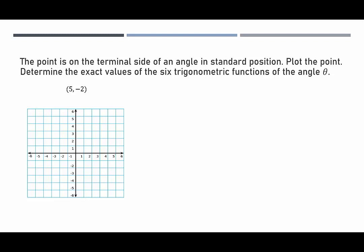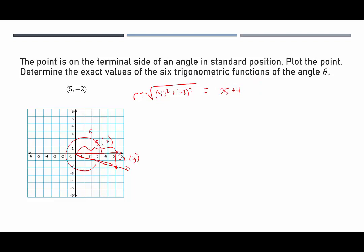For the point (5, -2), the terminal side is in quadrant four where only cosine is positive among the main functions. The radius r equals the square root of 5 squared plus (-2) squared — be careful, negative two squared is 4, not negative 4 — giving the square root of 25 plus 4, so r equals the square root of 29.